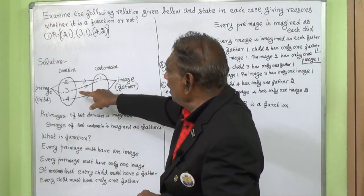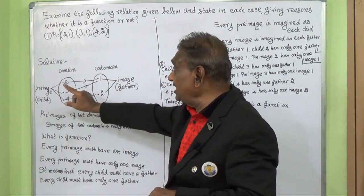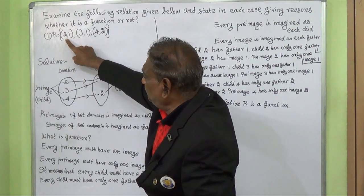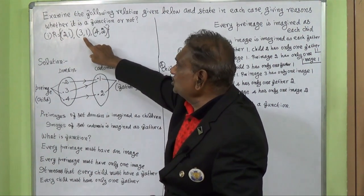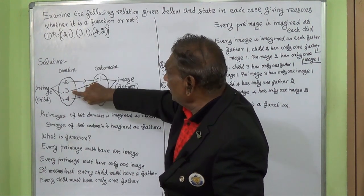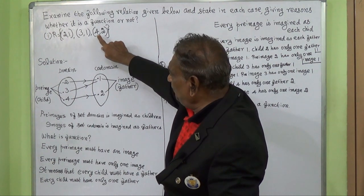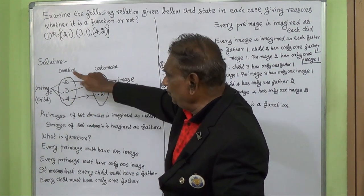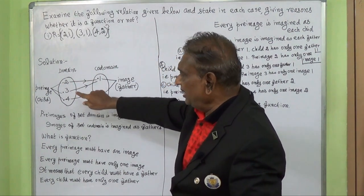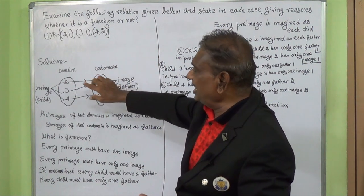The set of all first elements, that is, pre-images of the ordered pairs, is called the domain. And the set of all second elements, that is, images of the ordered pairs, is called co-domain. Writing all pre-images 2, 3, and 4 gives us the domain set.